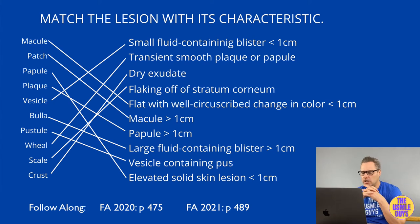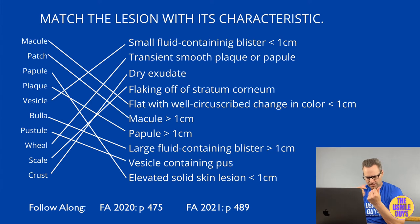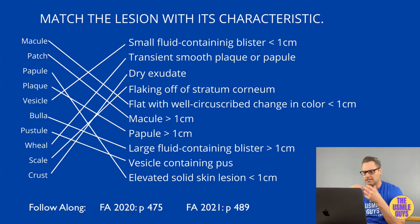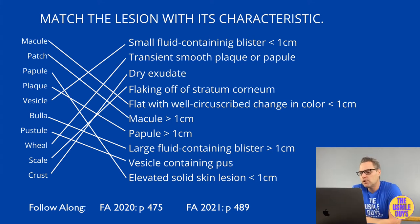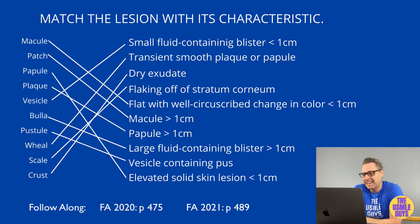A scale is a flaky lesion — think of a lizard or a snake, they're scaly and flaky looking. Think of eczema or psoriasis and the flaking off of the stratum corneum to recognize a scale. Finally, under our macroscopic terms, we have crust, which is simply dry exudate. You see this in something like impetigo.